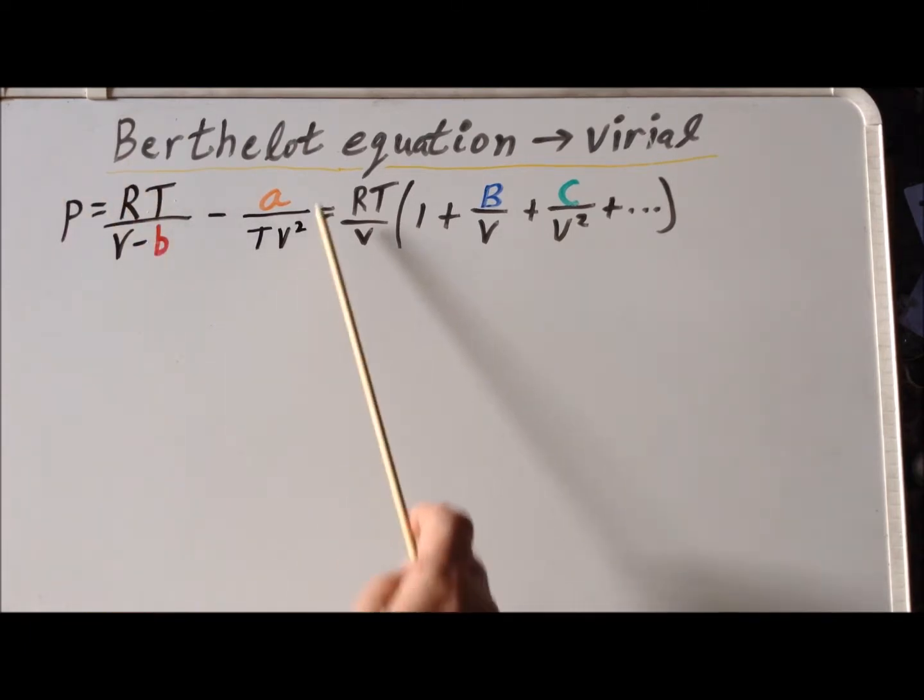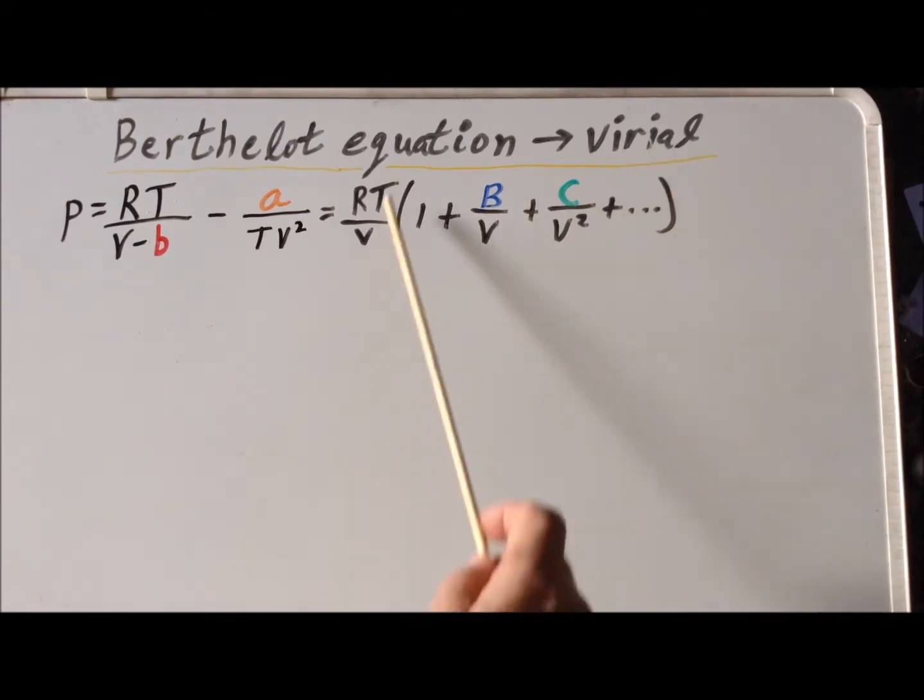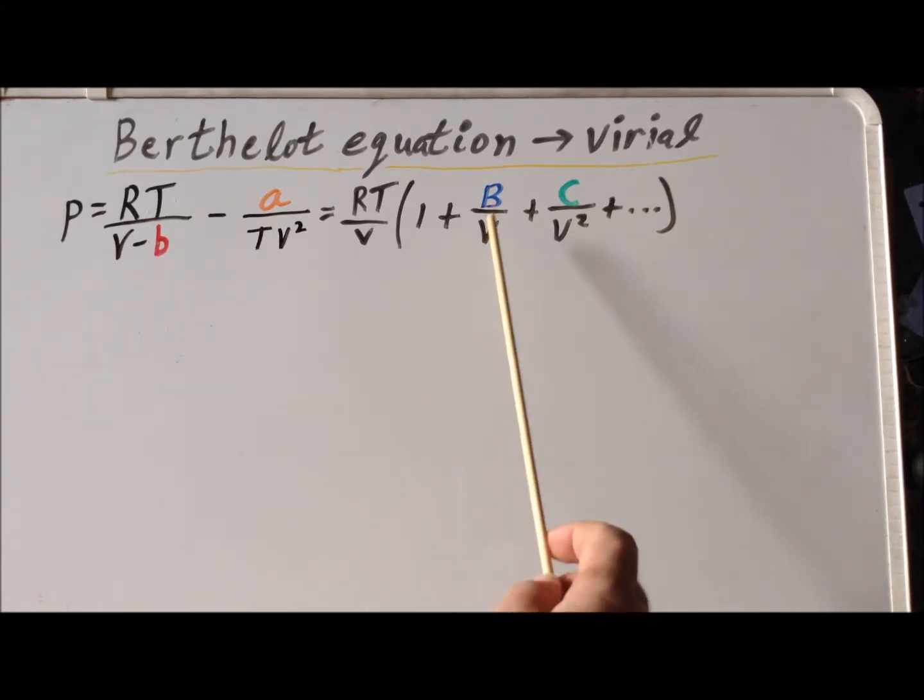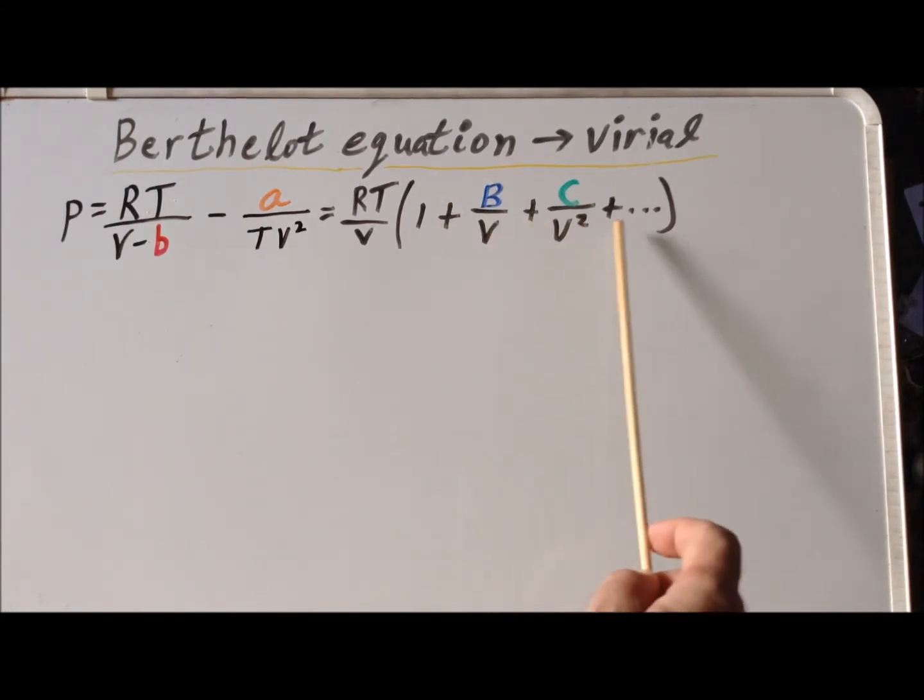So, we have our expression to the left for the Berthelot equation, and we set it equal to a virial expansion, where we have RT over V times this power series in 1 over V. And in principle, at least, this can be an infinite series.